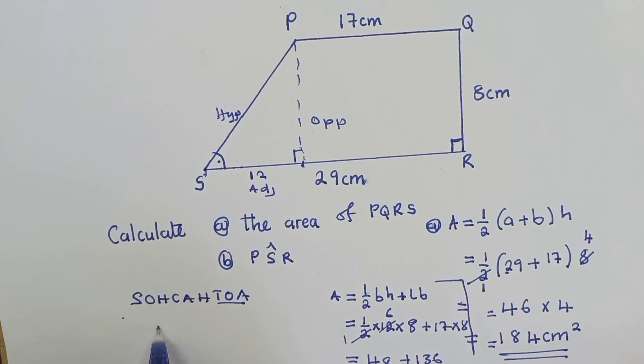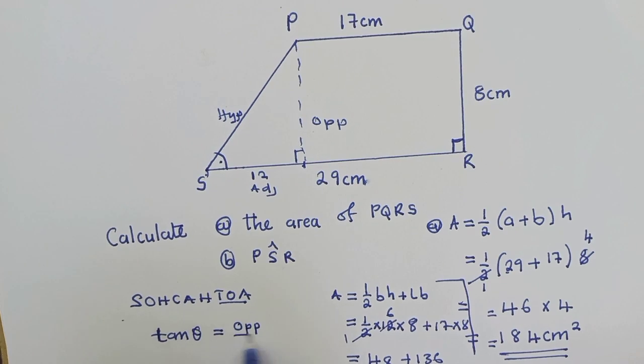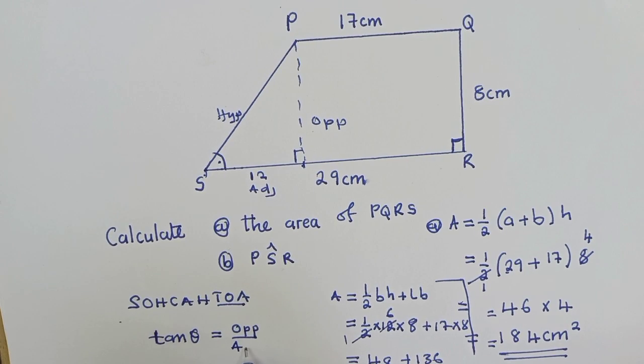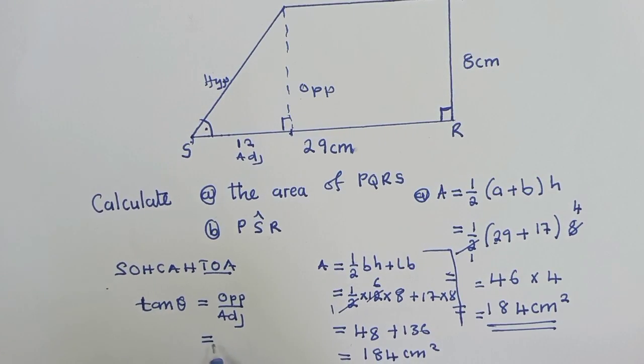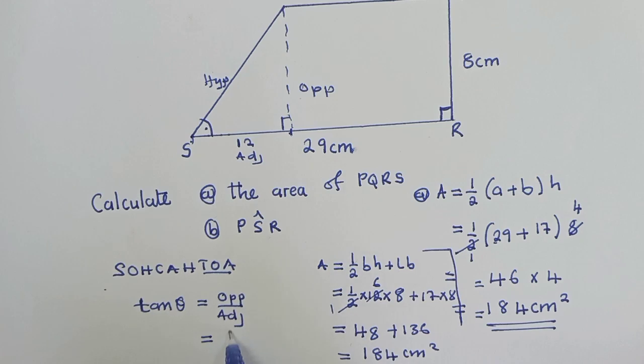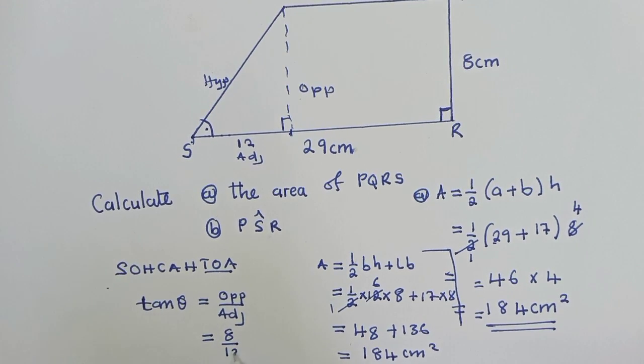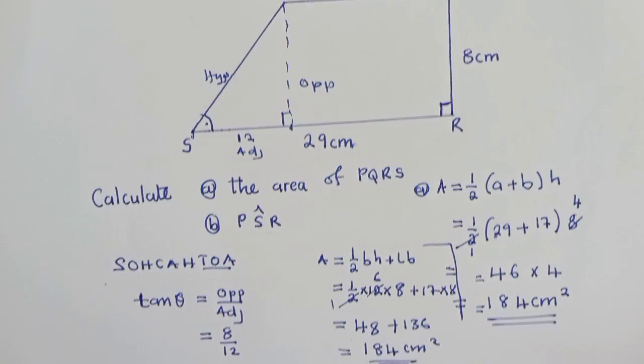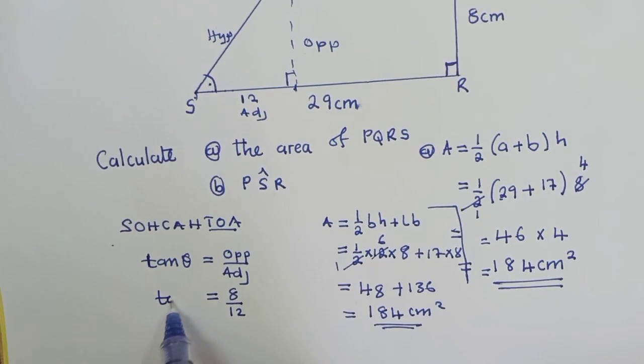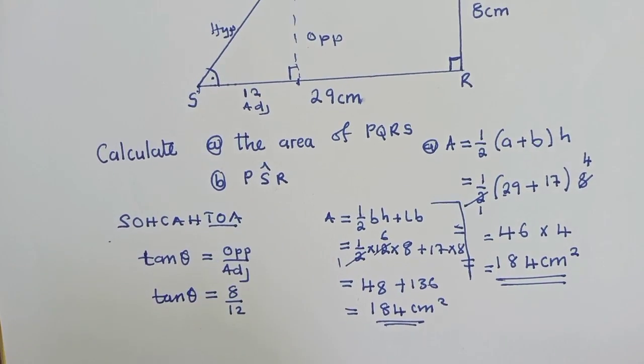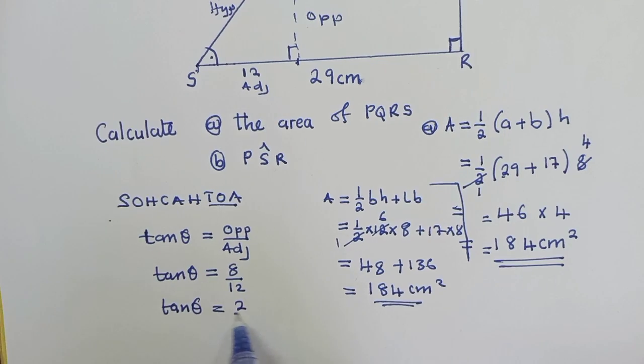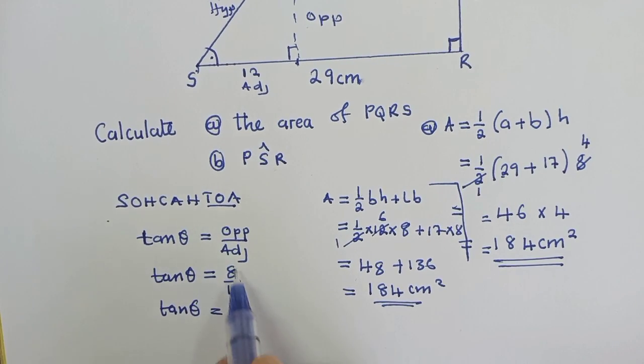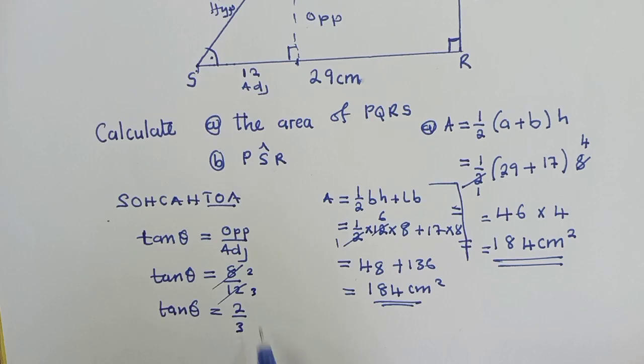So we'll say tan θ is equal to opposite over adjacent. Opposite over adjacent. So what is our opposite there? Our opposite is 8 over our adjacent is 12, right here. So we do our calculations nicely. Tan θ here, we can even reduce. If you don't mind, 4 into 8 is 2, into 12 is 3. So 4 into 8, 2 into 12 is 3.